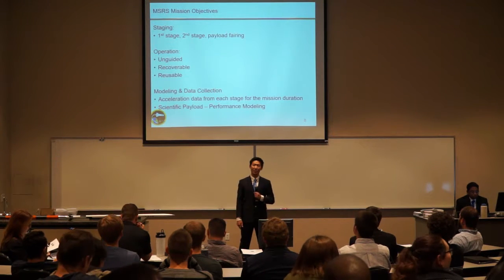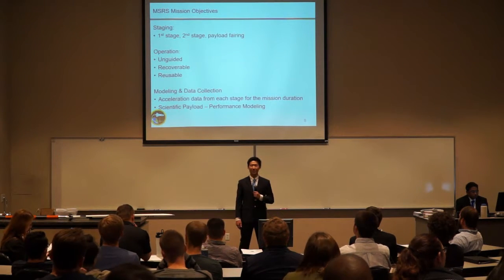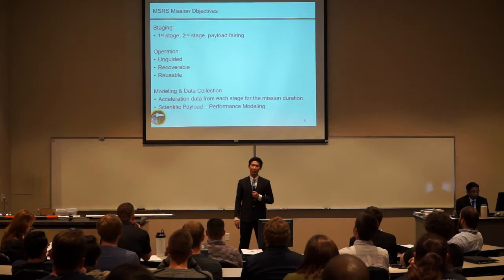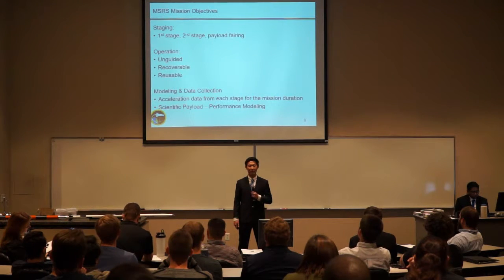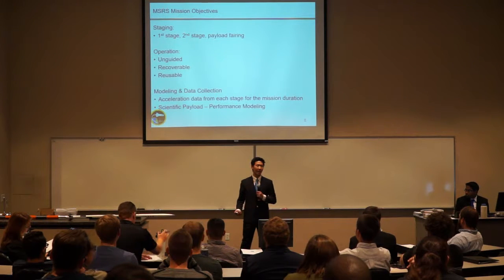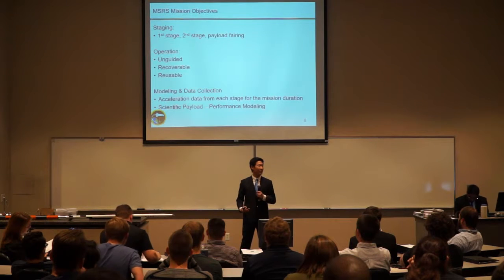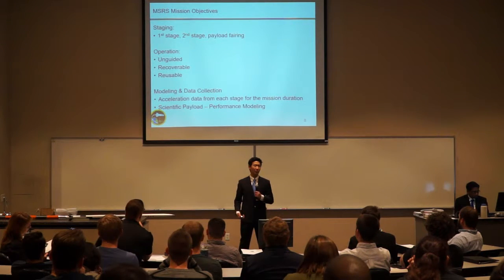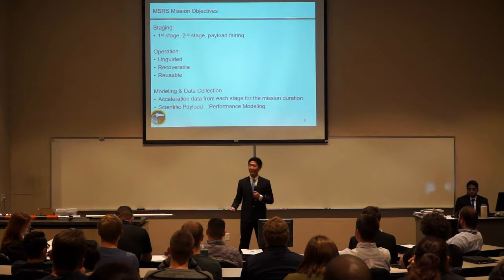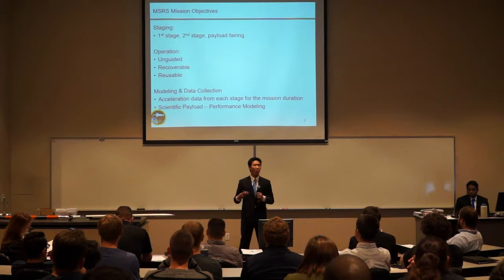Our mission objectives are in three categories, derived from a request for proposal from a customer. First, the staging: the system should consist of a first stage, second stage, and payload fairing. Under operation, the system should be unguided, reusable, and recoverable. Most importantly is the scientific aspect: the entire rocket supports a modeling and simulation package developed by the team, with onboard avionics that will determine state and high-precision telemetry data through the entire mission duration. We'll use that data to validate our performance modeling.